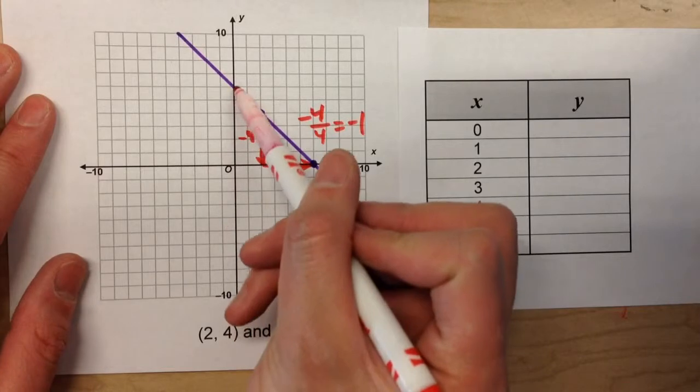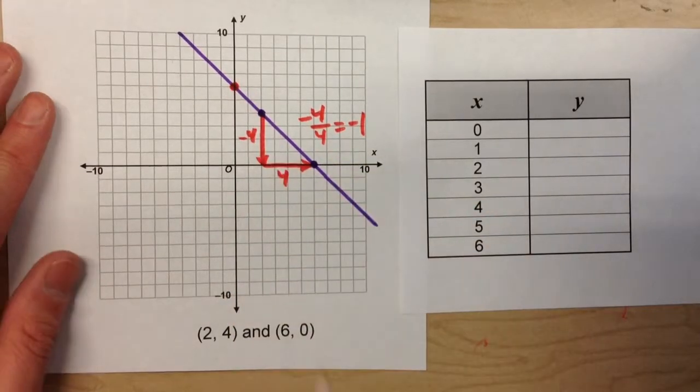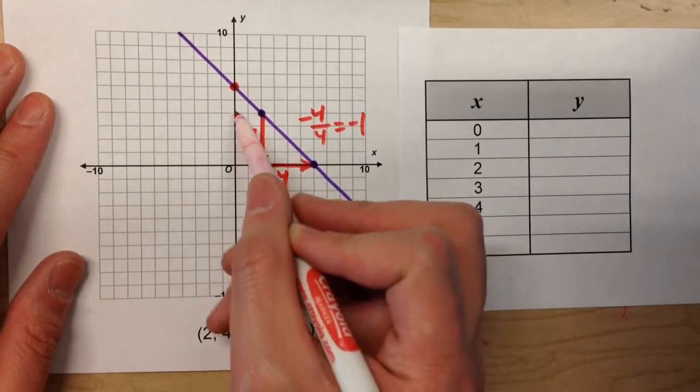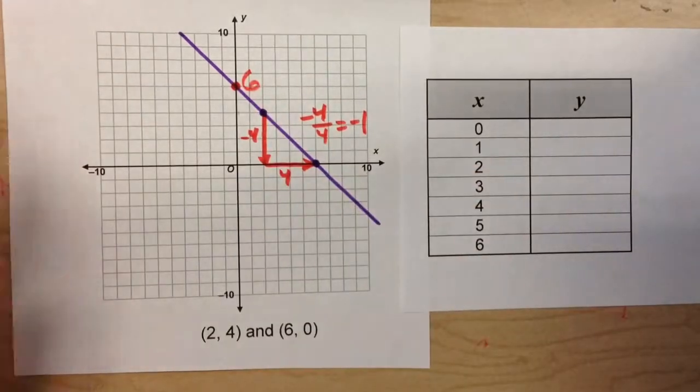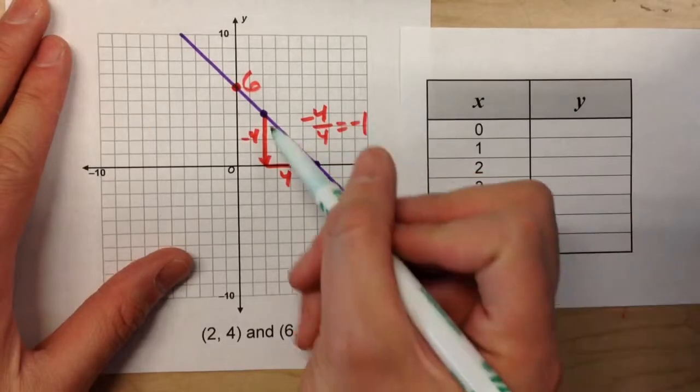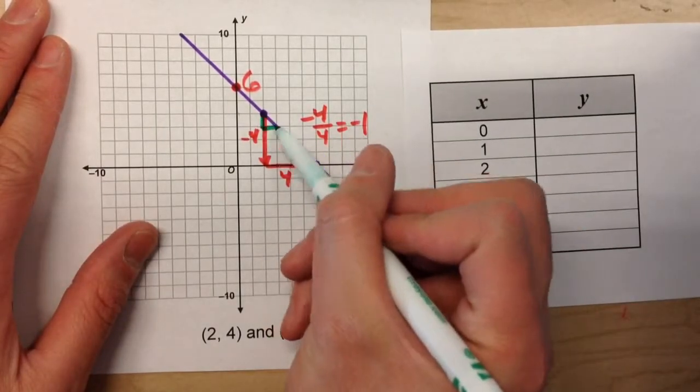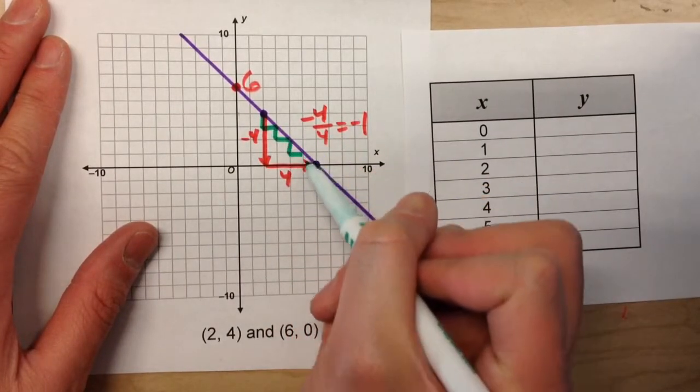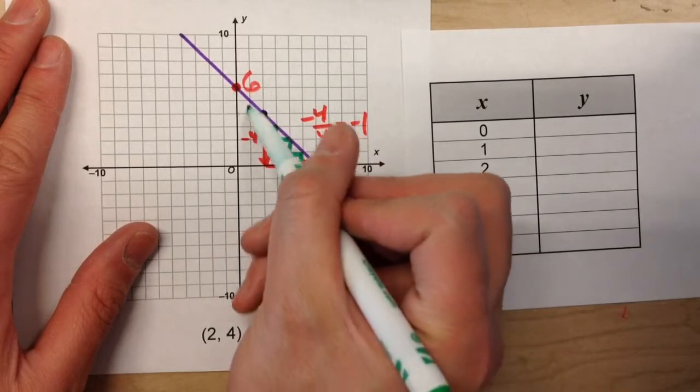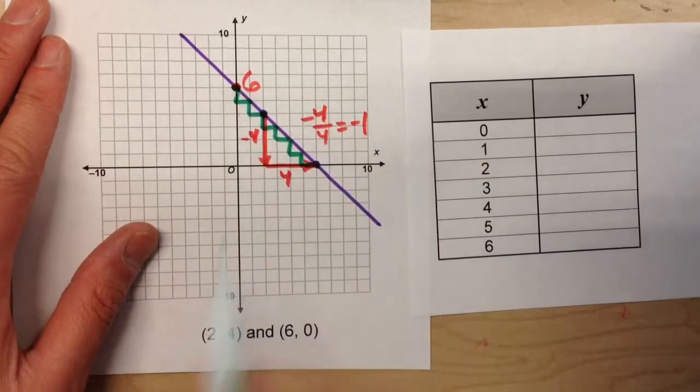And my y-intercept is right here: 1, 2, 3, 4, 5, 6. And if you're not quite sure if that's the actual y-intercept or not, use your slope. The slope says it's negative 1, so it's down 1 over 1, down 1 over 1, down 1 over 1. So just continue that pattern until you hit the y-intercept. Right there. We're correct.